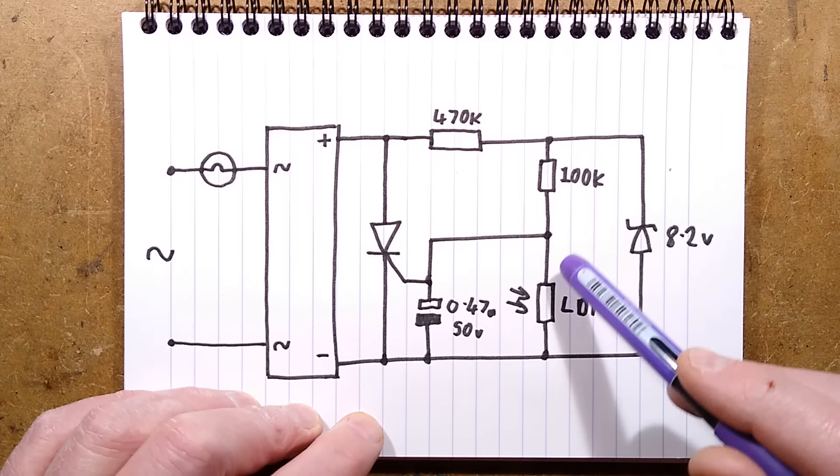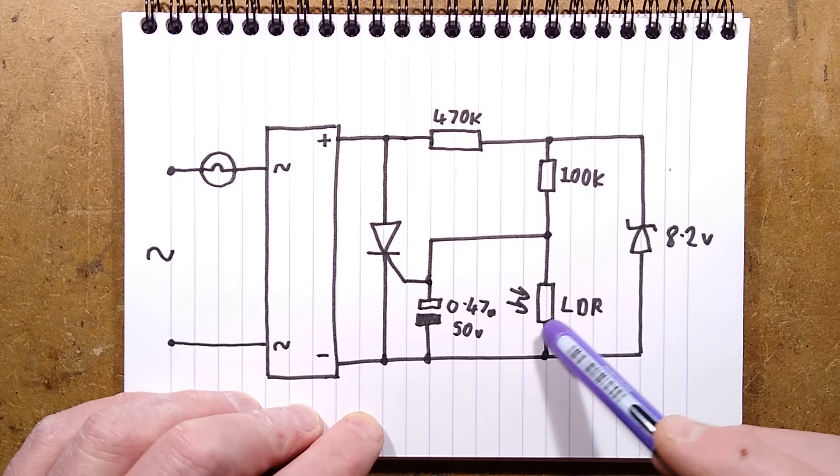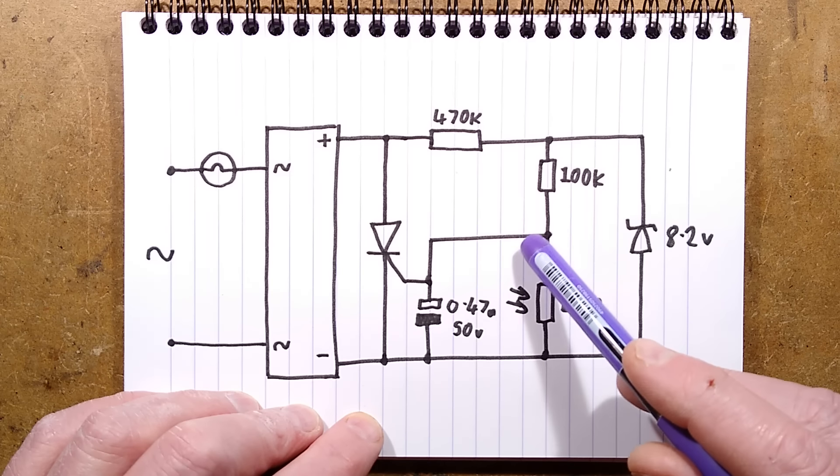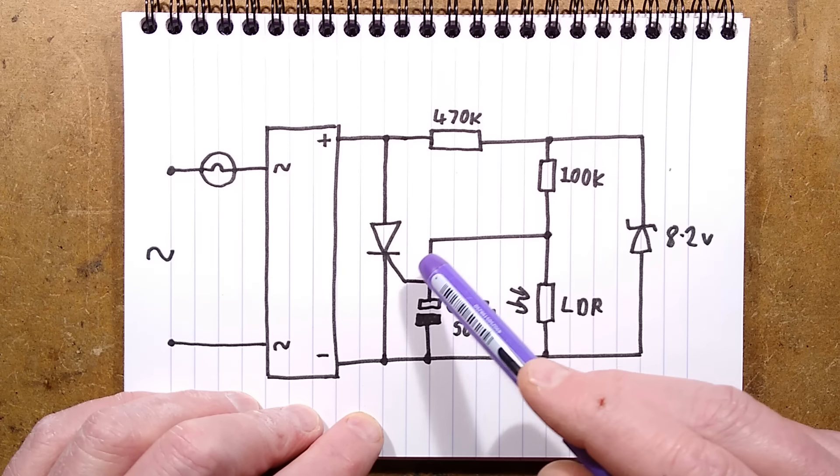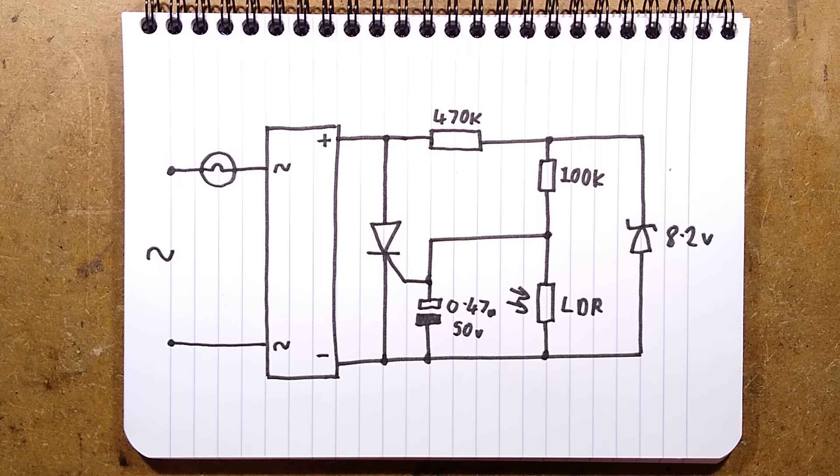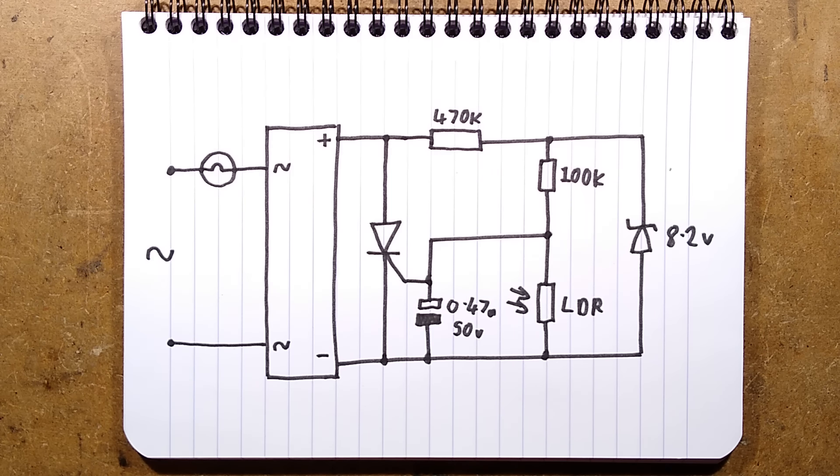And what that means is that during daylight, the current will be flowing through here, and the voltage in here will be low because the resistance of this is low. But when it gets dark and the resistance of that is high enough, the voltage then reaches the threshold which can trigger the thyristor. That is it. It's very simple.